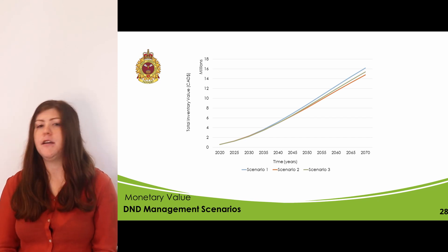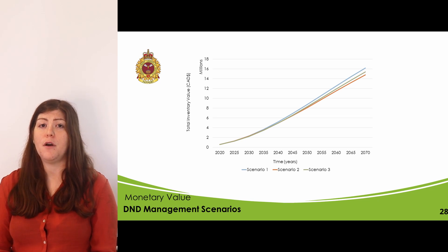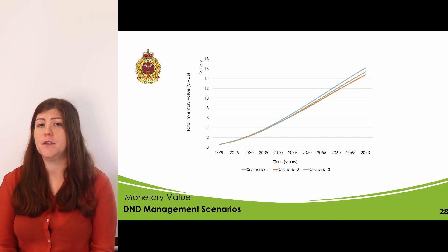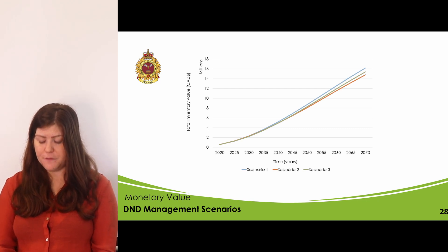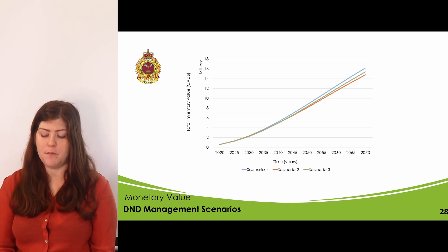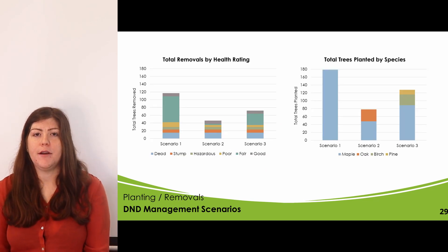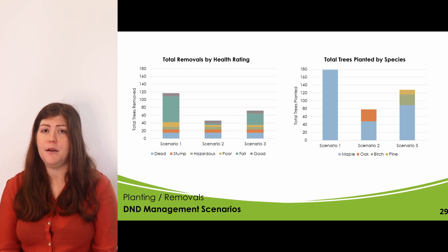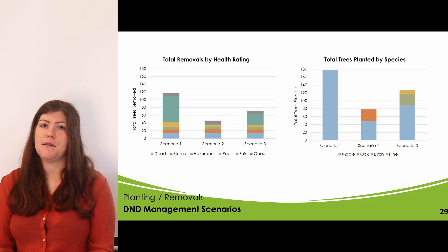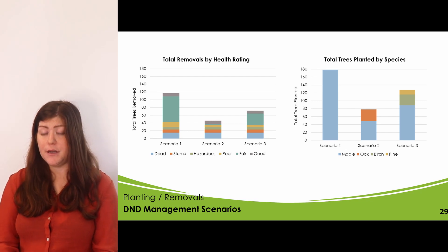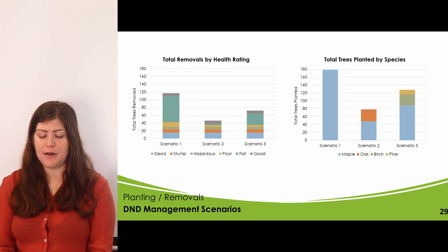The estimated monetary value of the street tree inventory over time performed similarly across all scenarios, ending in year 50 between $14 and $16 million. Under recommended Scenario 3, the final value in year 50 is estimated at $15.4 million. Maple was the most popular genus planted as it grows fast and has high monetary value. Under Scenario 3, birch and pine were planted to shift species composition and increase species diversity.